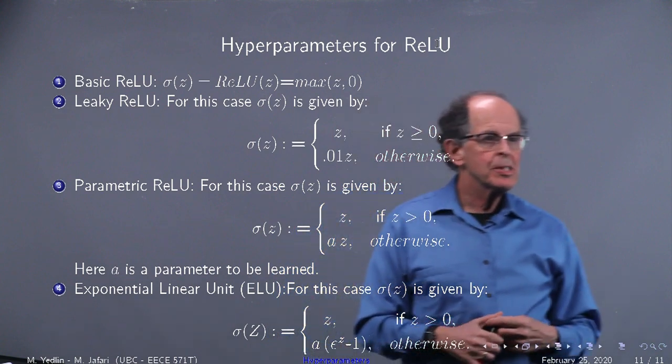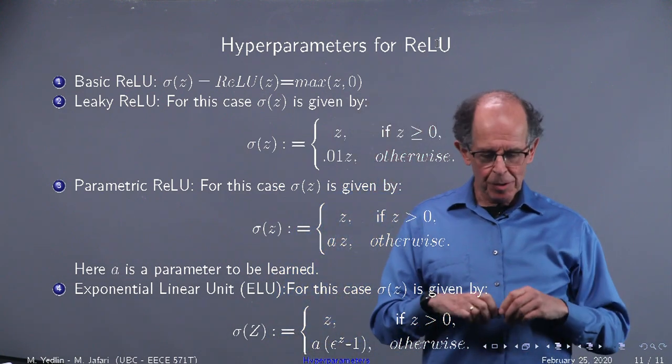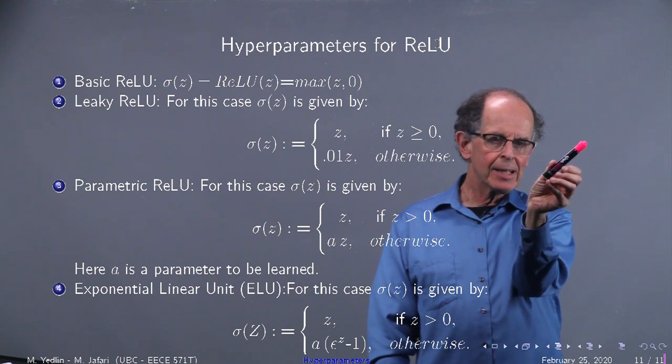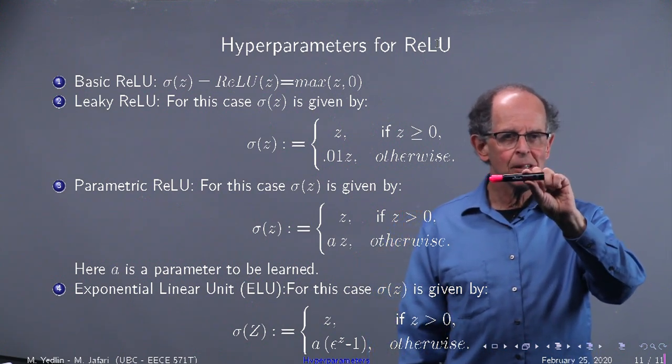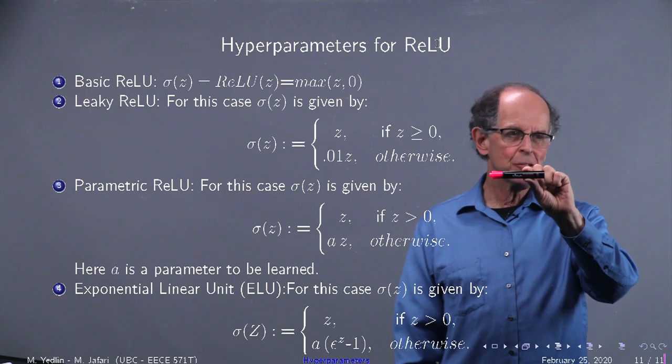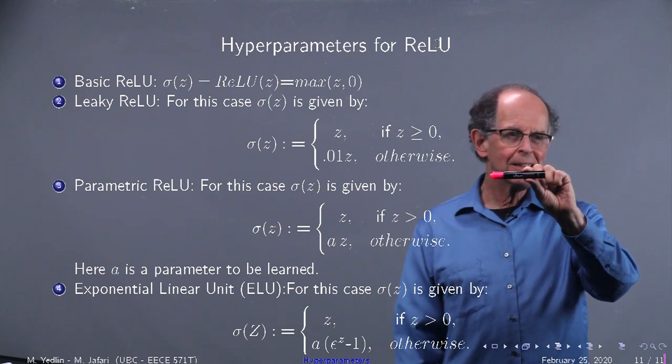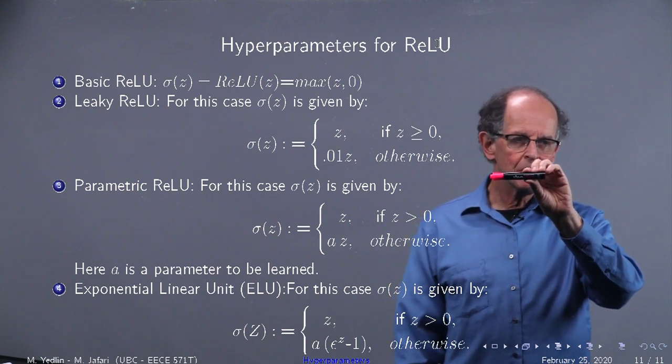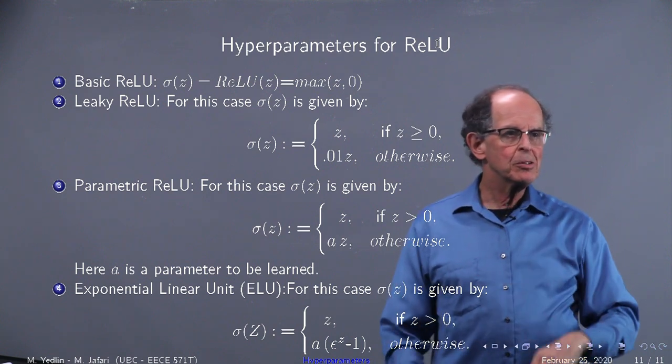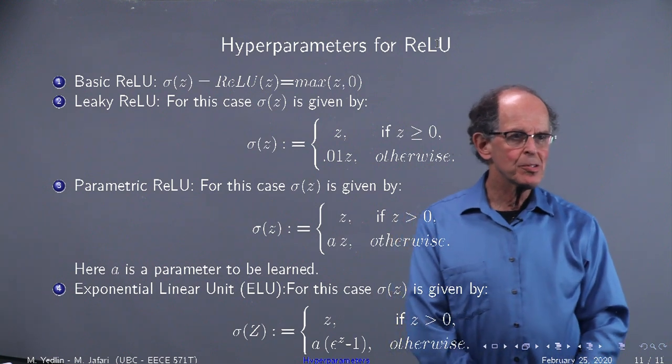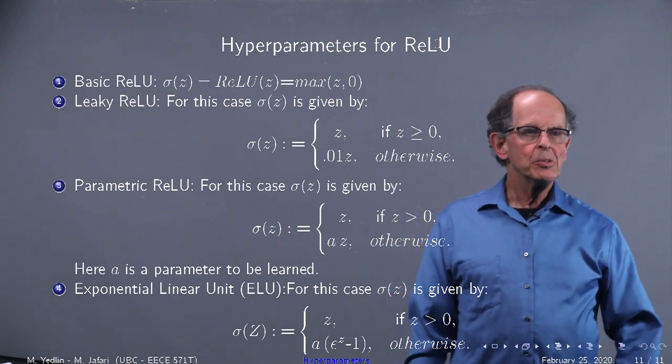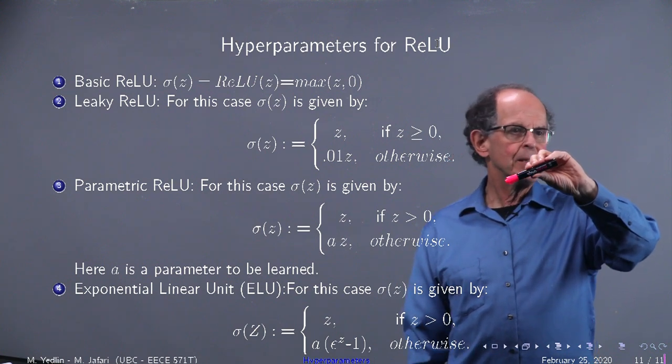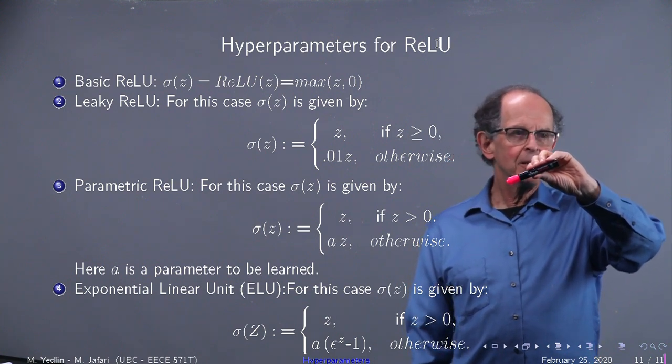We've already seen basic ReLU. The problem with ReLU is it's flat, then it goes like that. So when you're taking the derivative and z is less than zero, you get zero. So you could get possibly what we call a dead neuron for negative values of z. What you can do is not make it zero, but make it below zero a little bit. That's the case of Leaky ReLU.